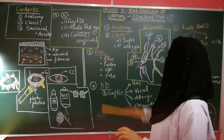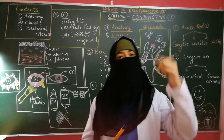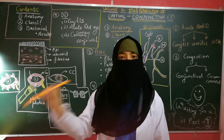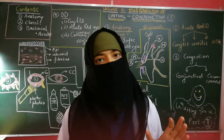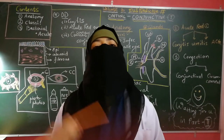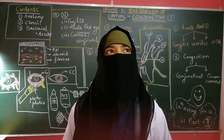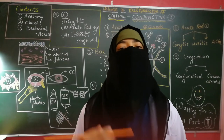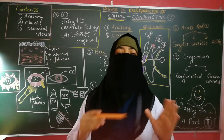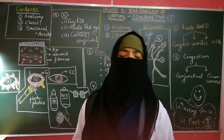In the classification of infective conjunctivitis: bacterial causes include Staph aureus, Haemophilus influenzae, Moraxella, Axenfeld's bacillus, Streptococcus pneumoniae, Strep pyogenes, Neisseria gonorrhoeae, Neisseria meningitidis, and diphtheria. Bacterial conjunctivitis can further be acute, hyperacute, chronic, or angular.